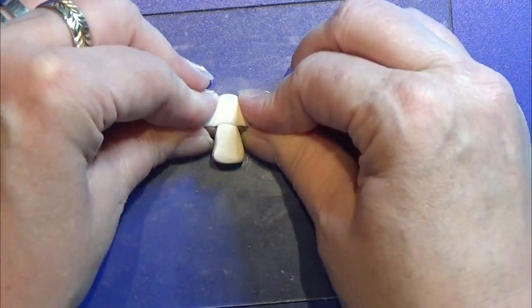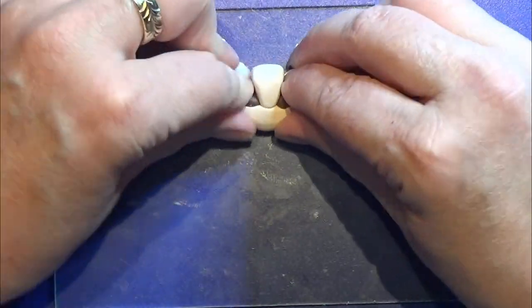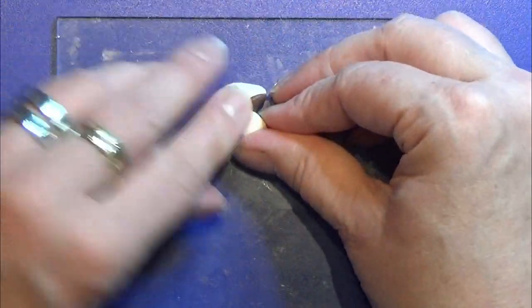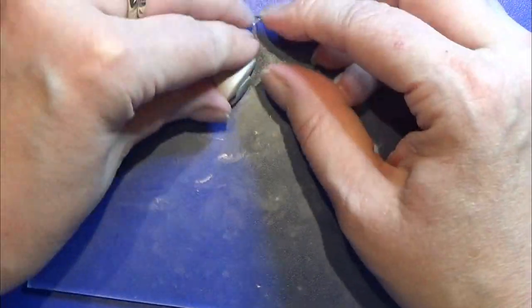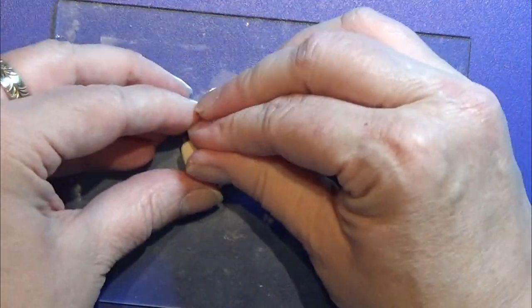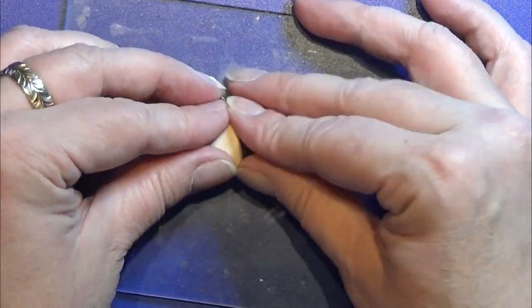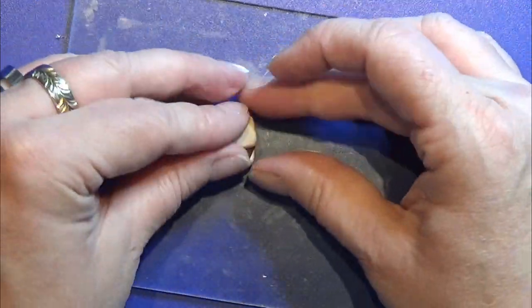As this cane is not round, I will not be able to roll it so that it gets thinner, but I have to squeeze and stretch it instead. So first of all, I'm just squeezing it all together so I'm sure that there are no air bubbles.